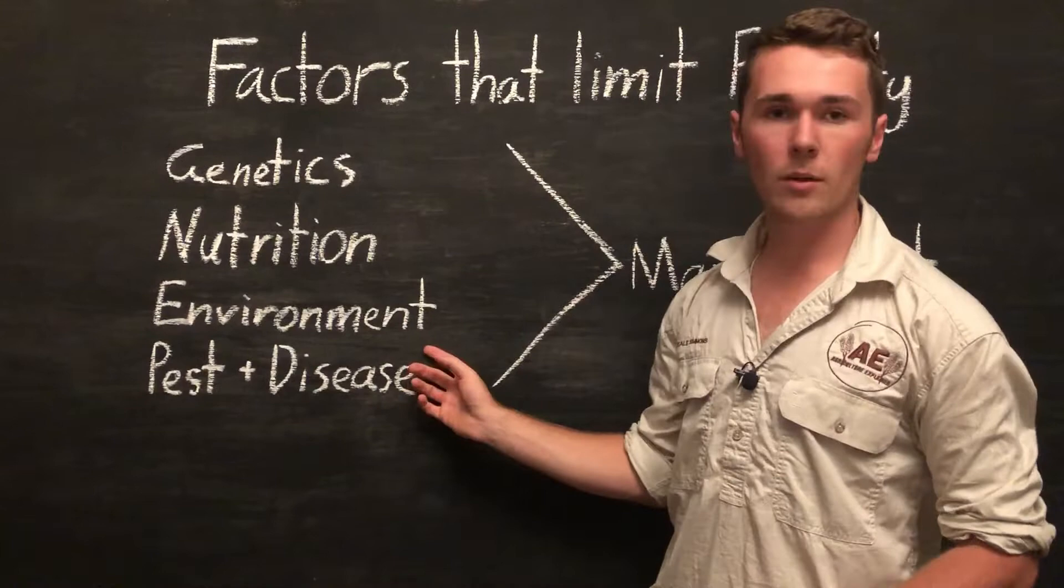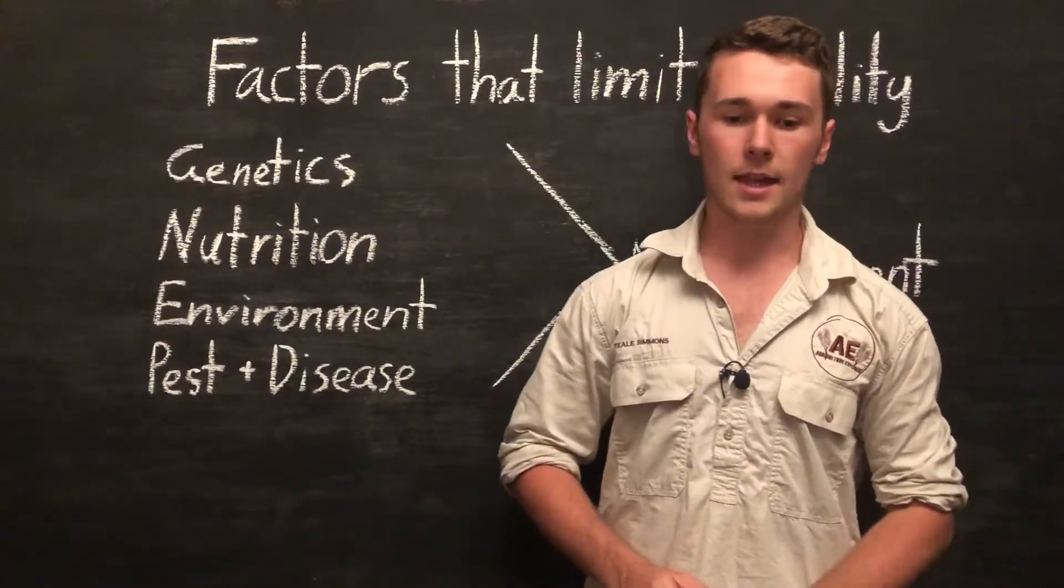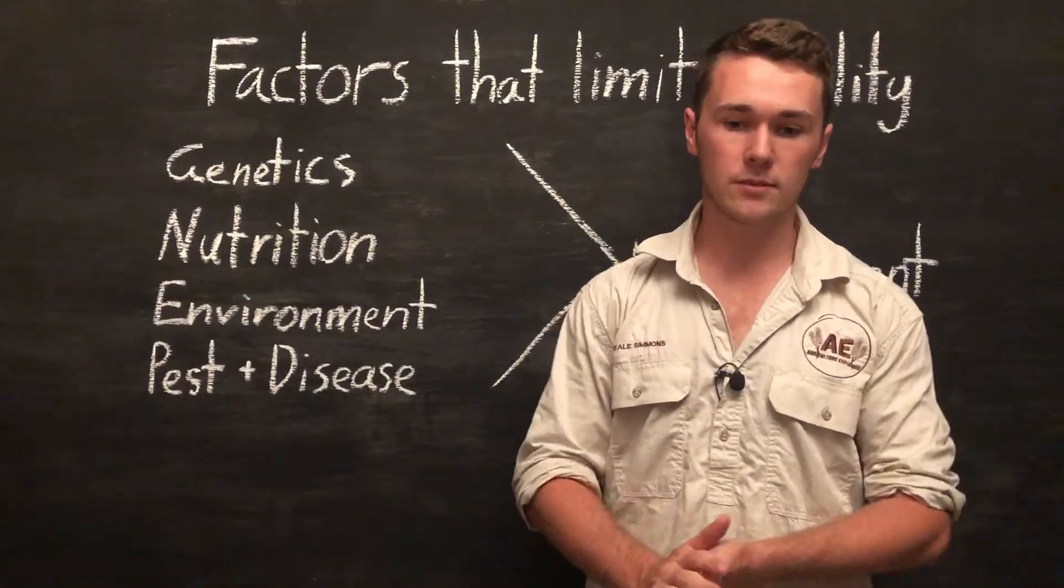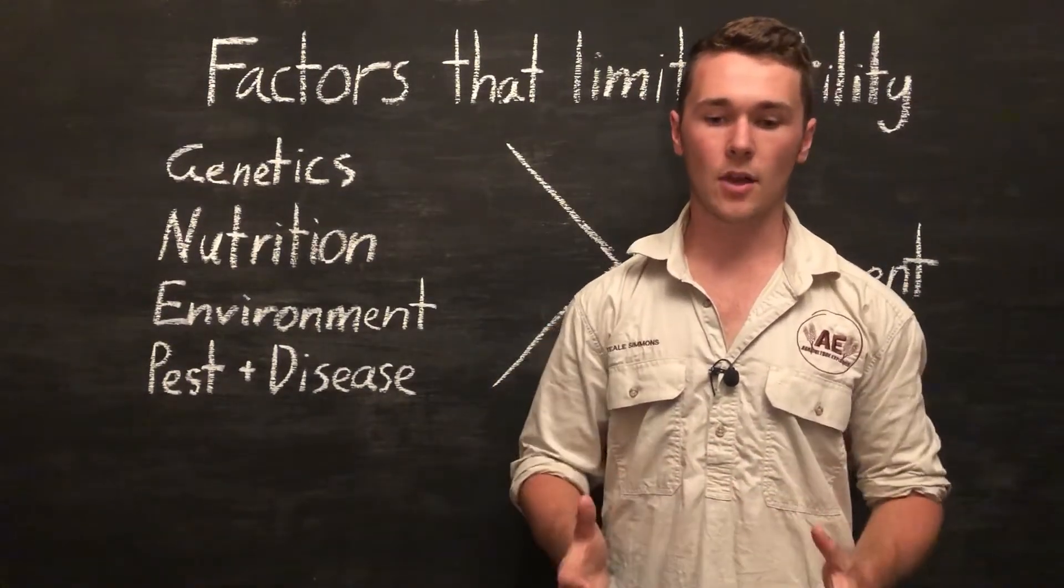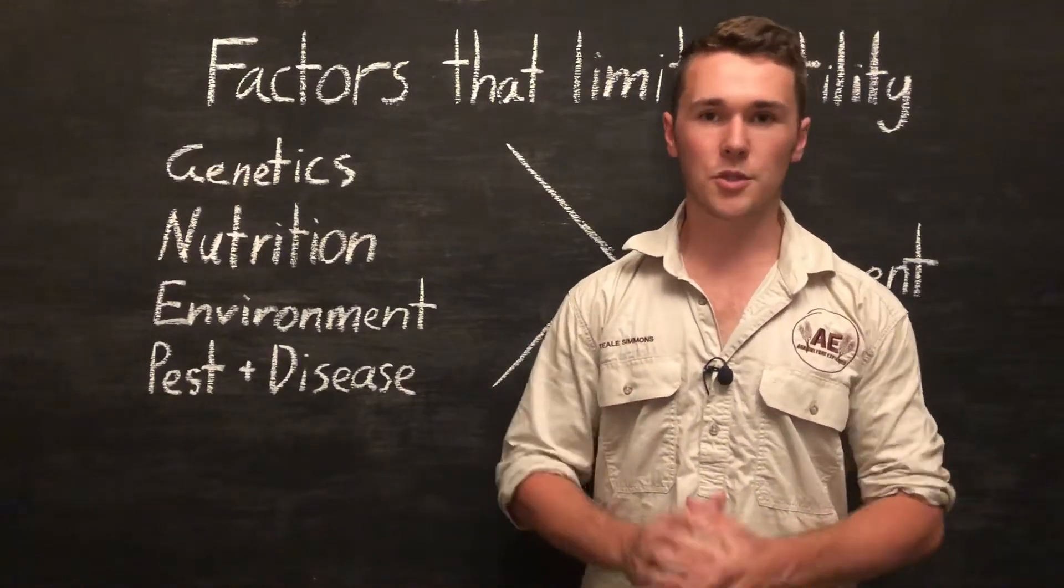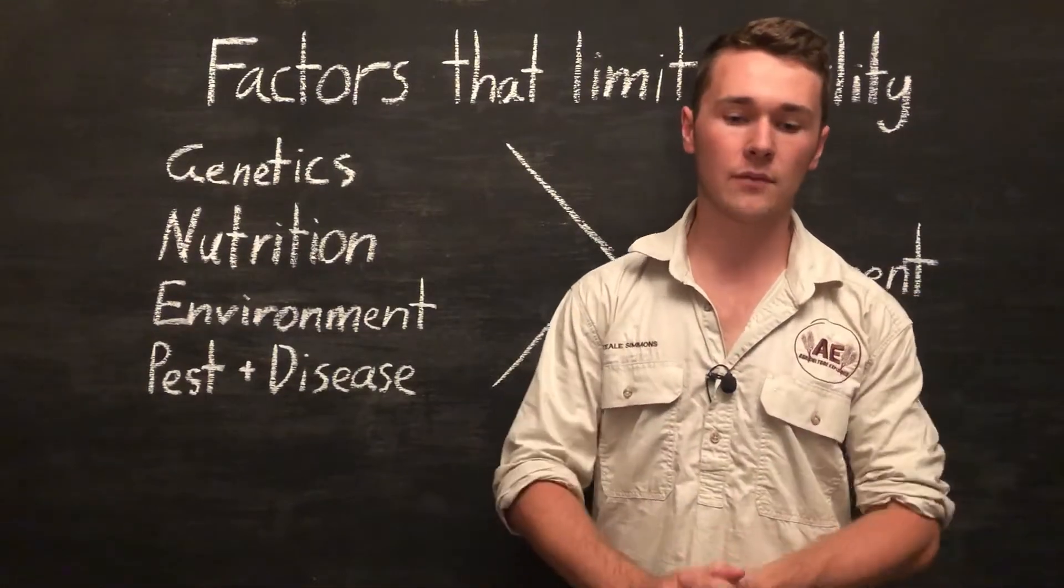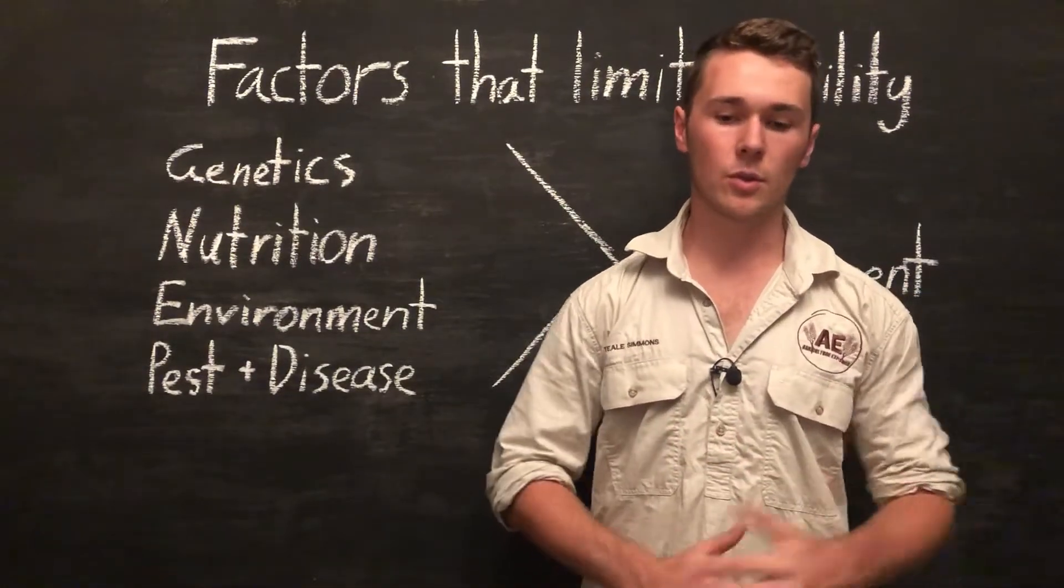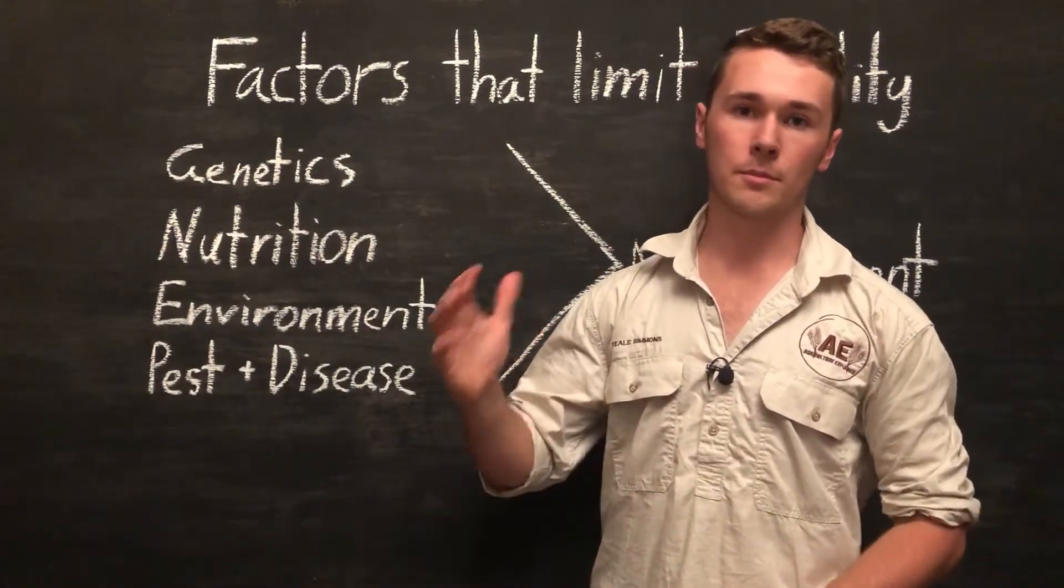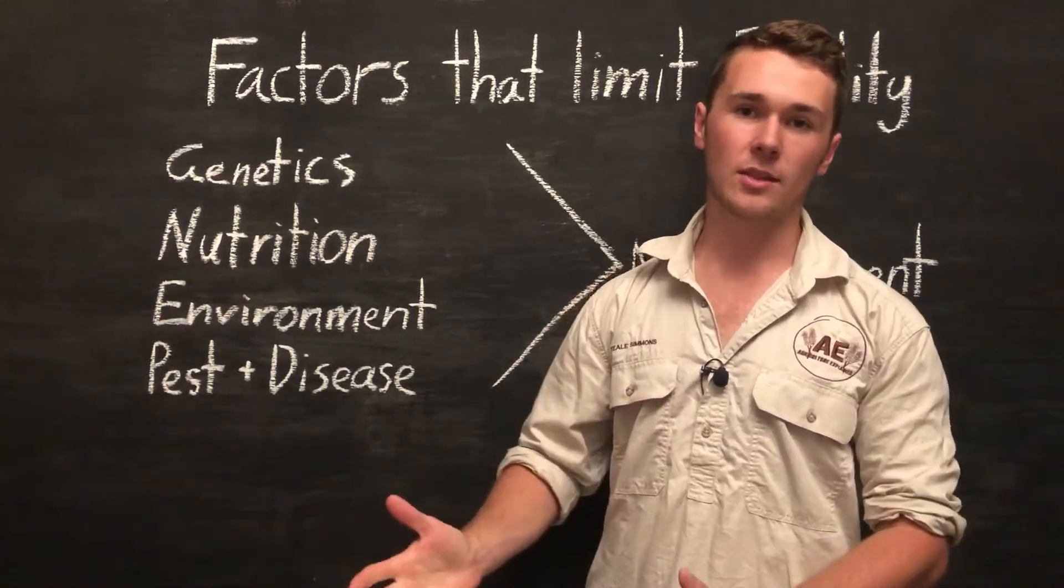The environment that our animals are in can also affect their fertility. So for example, daylight can affect fertility of some animals such as horses, sheep, goat and poultry, as these animals are seasonally polyestrous, which means they only mate during certain times of the year. Now these animals have developed that due to evolution, to ensure that their offspring are born in particular times of the year to ensure the maximum chance of survival.